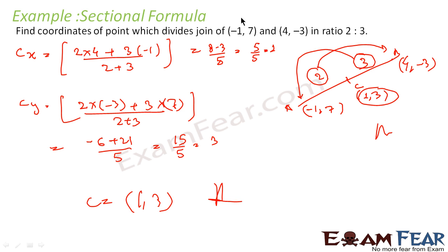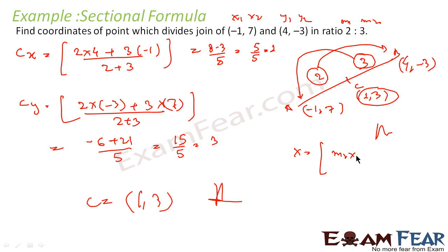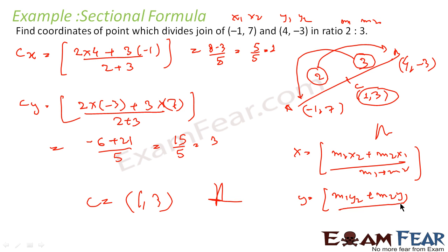Very simple — we just used the shortcut way. You can also use the normal formula: x = (m1·x2 + m2·x1) / (m1 + m2) and y = (m1·y2 + m2·y1) / (m1 + m2). You have x and y formulas, you have m1, m2, x1, x2, y1, y2 — apply the formula and you will get the same answer. Any approach is fine.